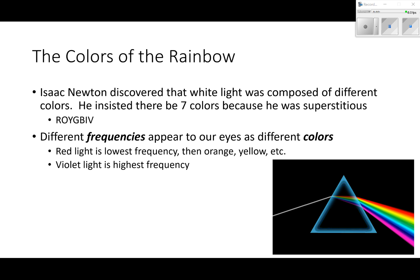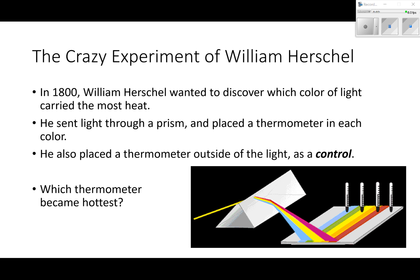Now I'm going to tell you about one of the craziest experiments in all of science. In 1800, this is William Herschel - he's building on what Newton did. He wanted to discover which color of light carried the most heat. If you sit out in the sun, you know that you can get hot just from sitting in the sun. Light carries heat. He wanted to know which color had the most heat, so he sends light through a prism and placed a thermometer in each color, and he placed a thermometer outside of the light as a control.